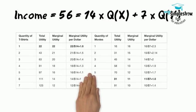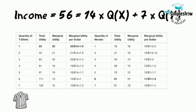Here is how we find the optimal consumption bundle. If he purchases a t-shirt, the marginal utility per dollar spent will be 1.6. If he purchases a movie, the marginal utility per dollar spent will be 2.3. Therefore, the first purchase will be the movie because it gives him the highest marginal utility per dollar and is affordable.